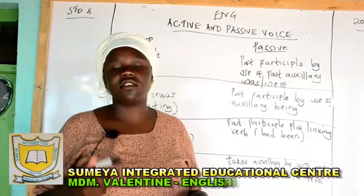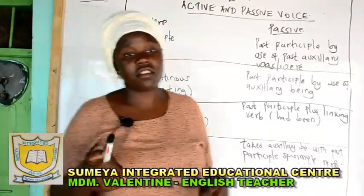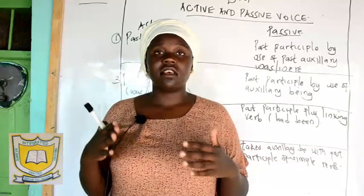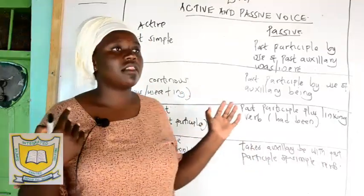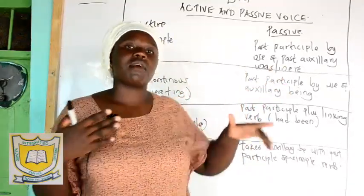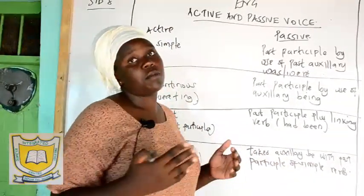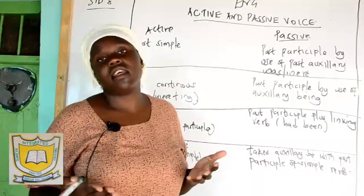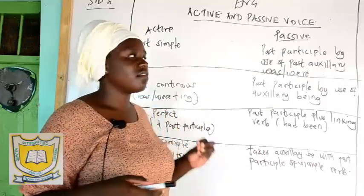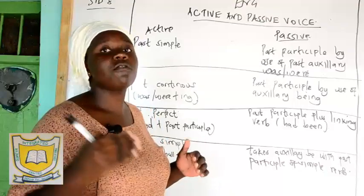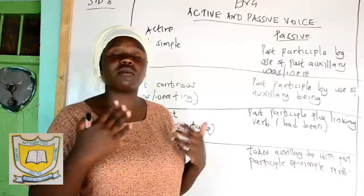Good morning, welcome to our English lesson today. It is a continuation of Monday's lesson on active and passive voice. On Monday I talked about the present simple tense, the present continuous tense, and the present perfect tense, and how to change the present tenses from the active voice to the passive voice. In our lesson today we are going to deal with the past tense — simple past tense, the past continuous, and the past perfect — and how to change these sentences from the active voice to the passive voice. The active voice is when the subject is the main focus of the sentence, whereas the passive voice is when the object receiving the action becomes the main focus of a sentence.